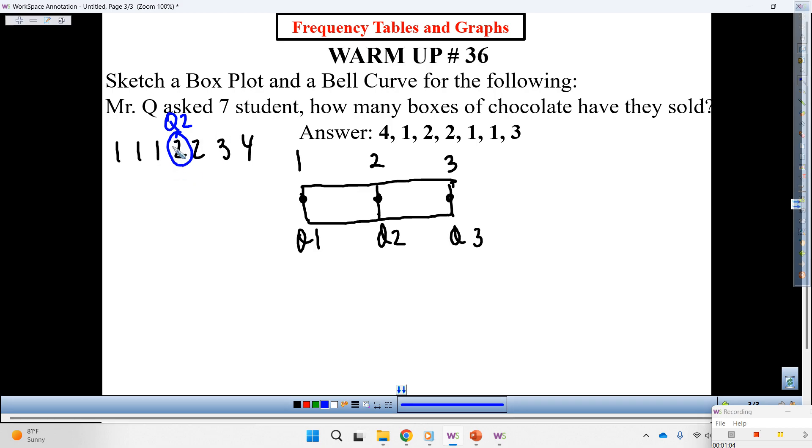Amelia, once you get Q2, which is this one, you split the data into two sections. The lower part, which is this one, and the upper part, which is this one. So from the lower part, you need to go to the middle again, and that's going to be our Q1. From the upper part, you go to the middle again, and that's going to be our Q3.